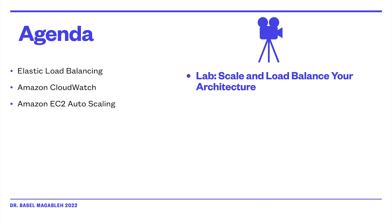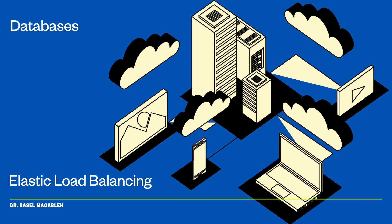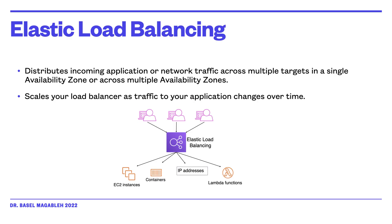Additional servers are generally required to meet these high volumes. Elastic Load Balancing is an AWS service that distributes incoming application or network traffic across multiple targets, such as Amazon EC2 instances, containers, IP addresses, and Lambda functions in a single availability zone or across multiple availability zones. Elastic Load Balancing scales your application as traffic changes over time, and it can automatically scale to most workloads.